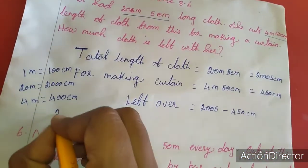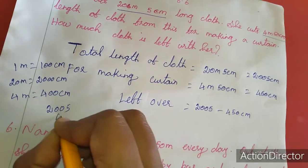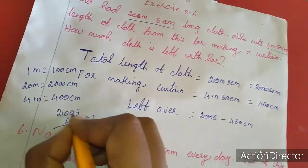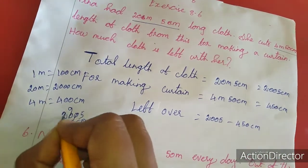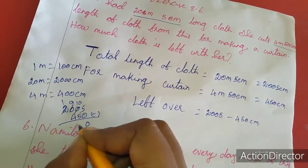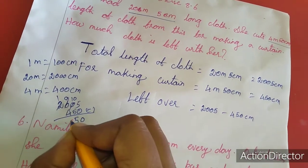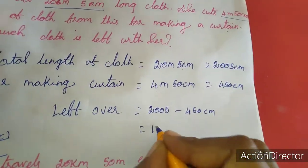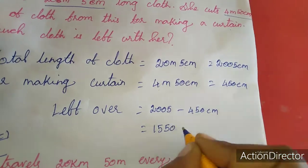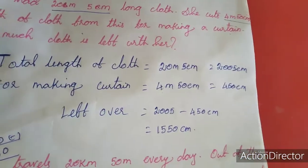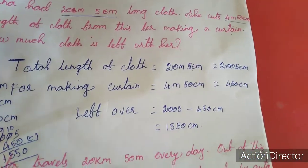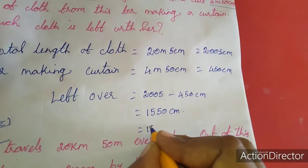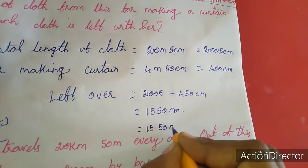In the subtraction: 2005 minus 450. With borrowing: 10 minus 5 is 5, then 9 minus 4 is 5, giving 1555 centimeter. This is in centimeter, so dividing by 100 gives 15.50 meter remaining cloth.